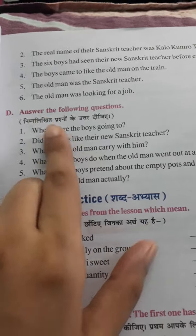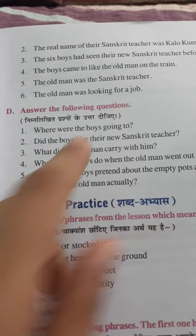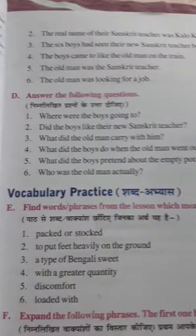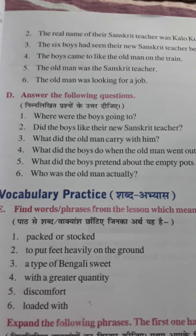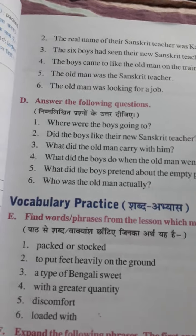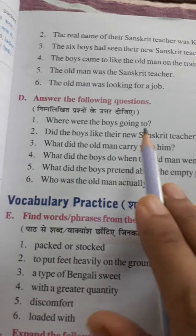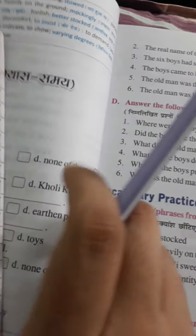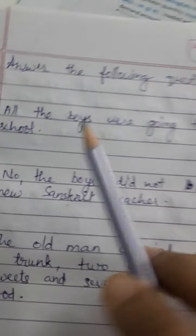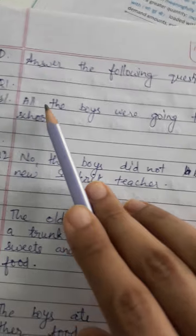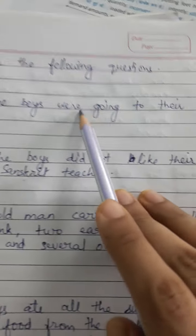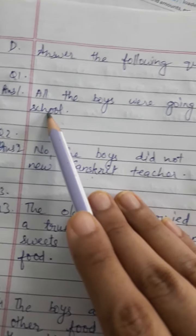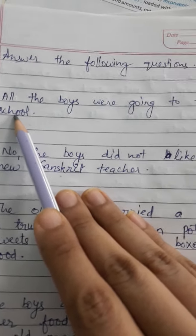Answer the following questions. First: where were the boys going to? Ladke kahaan ja rahe the? All the boys were going to their school. Woha apne school ja rahe the.